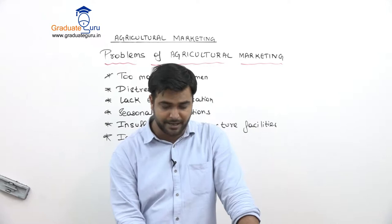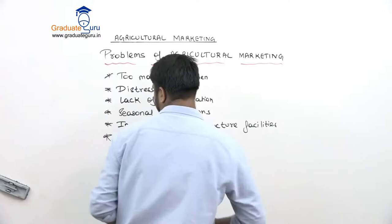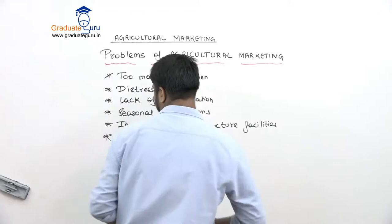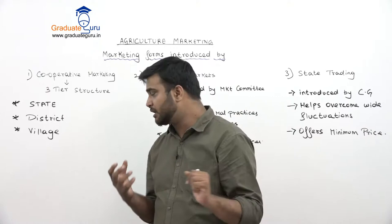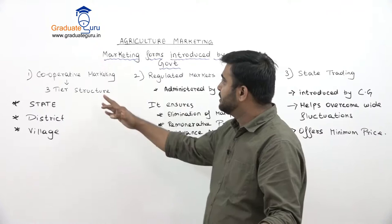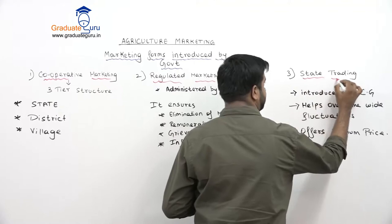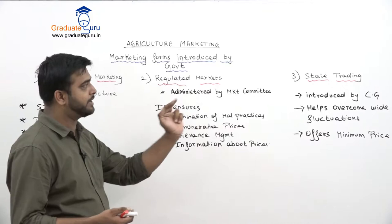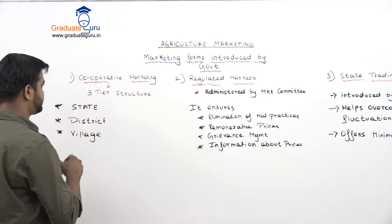So we've done the essentials of good market and the problems of agricultural marketing. Next we'll look at marketing forms introduced by the government — what ways has the government introduced to market agricultural products in India? The government has introduced three forms: cooperative marketing, regulated market, and state trading. These are the three forms of marketing agricultural products in India introduced by the government.